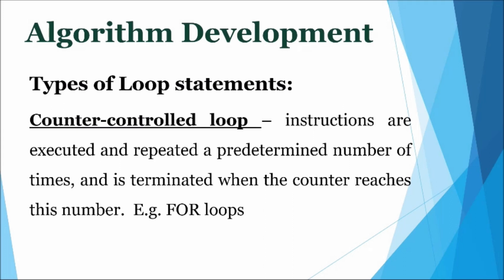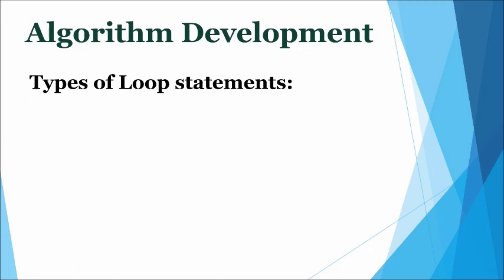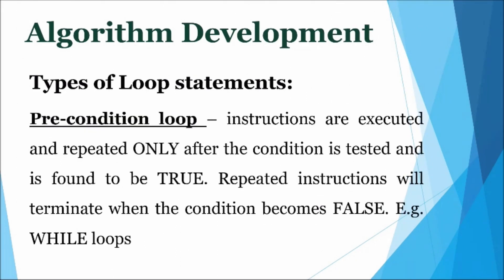Counter-controlled loop: with this type of loop, instructions are executed and repeated a predetermined number of times and is terminated when the counter reaches its intended value. An example of this loop is the for loop. Precondition loop: with this type of loop, instructions are executed and repeated only after the condition is tested and is found to be true. Repeated instructions will then terminate when the condition becomes false.